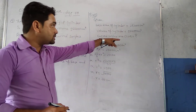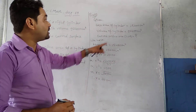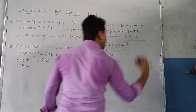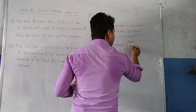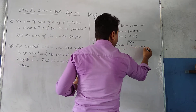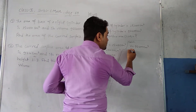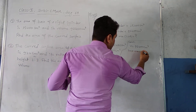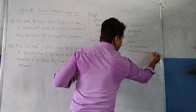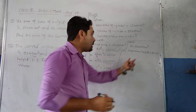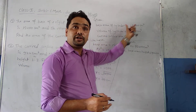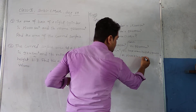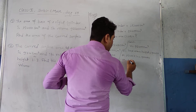Now using the volume: volume = base area × height. Volume is given as 92400 cm³, base area is 15400, so: 15400 × h = 92400.